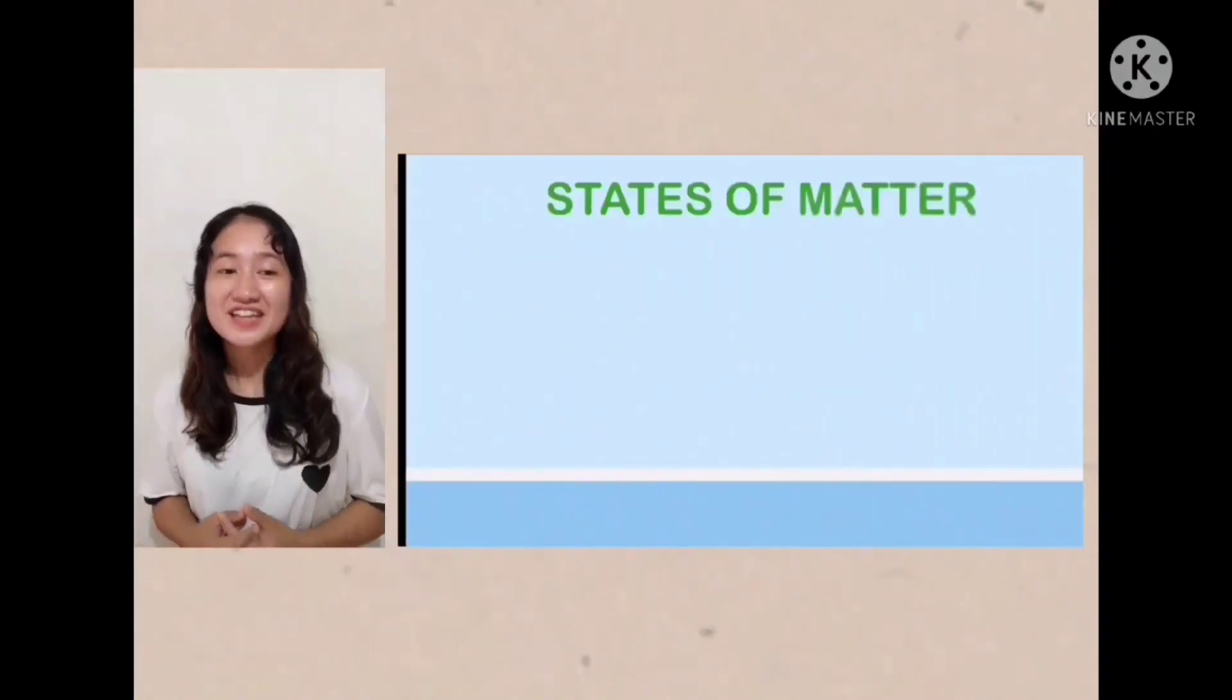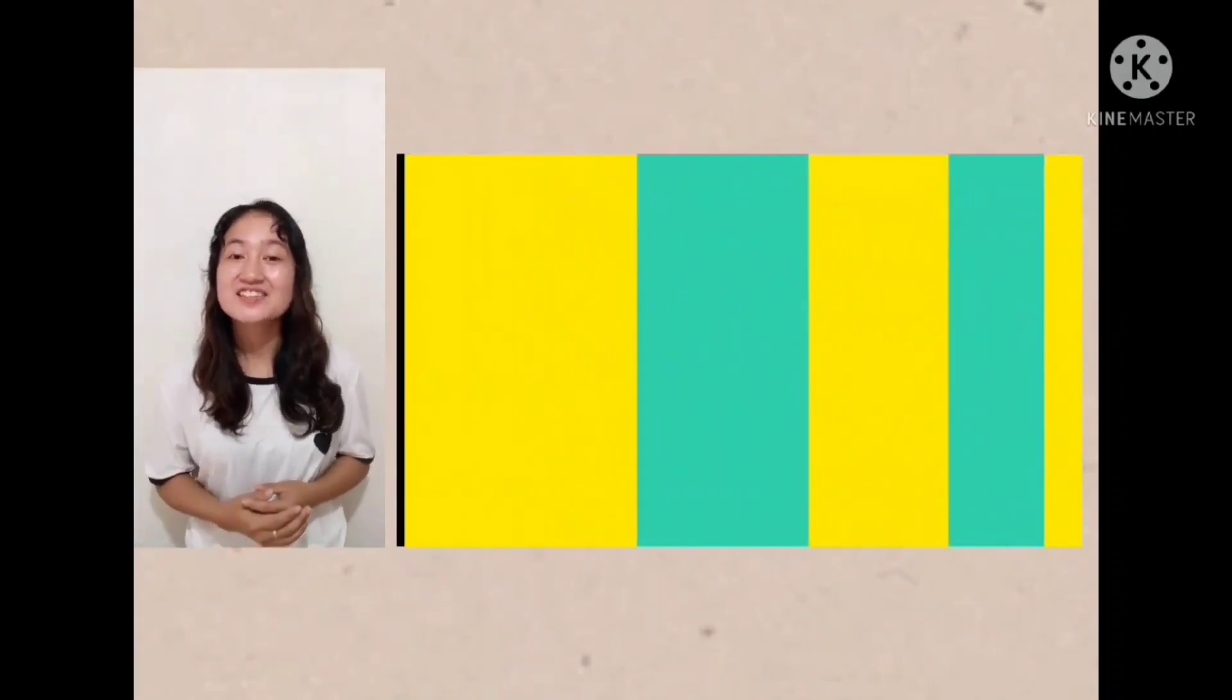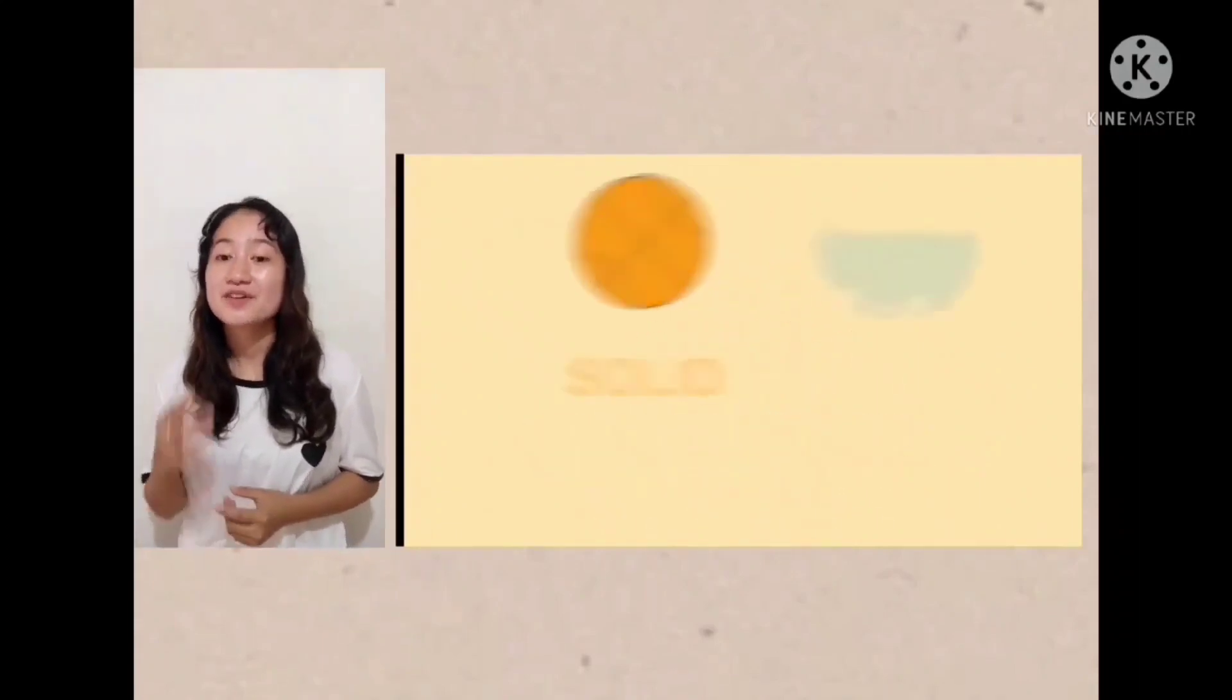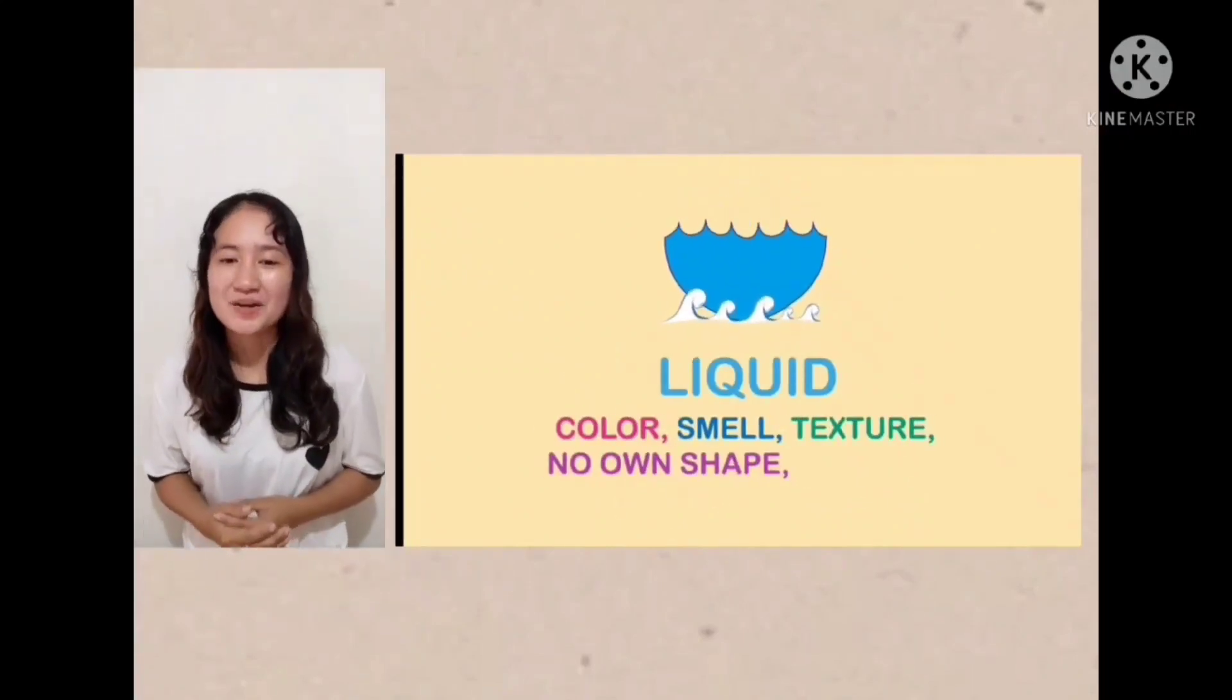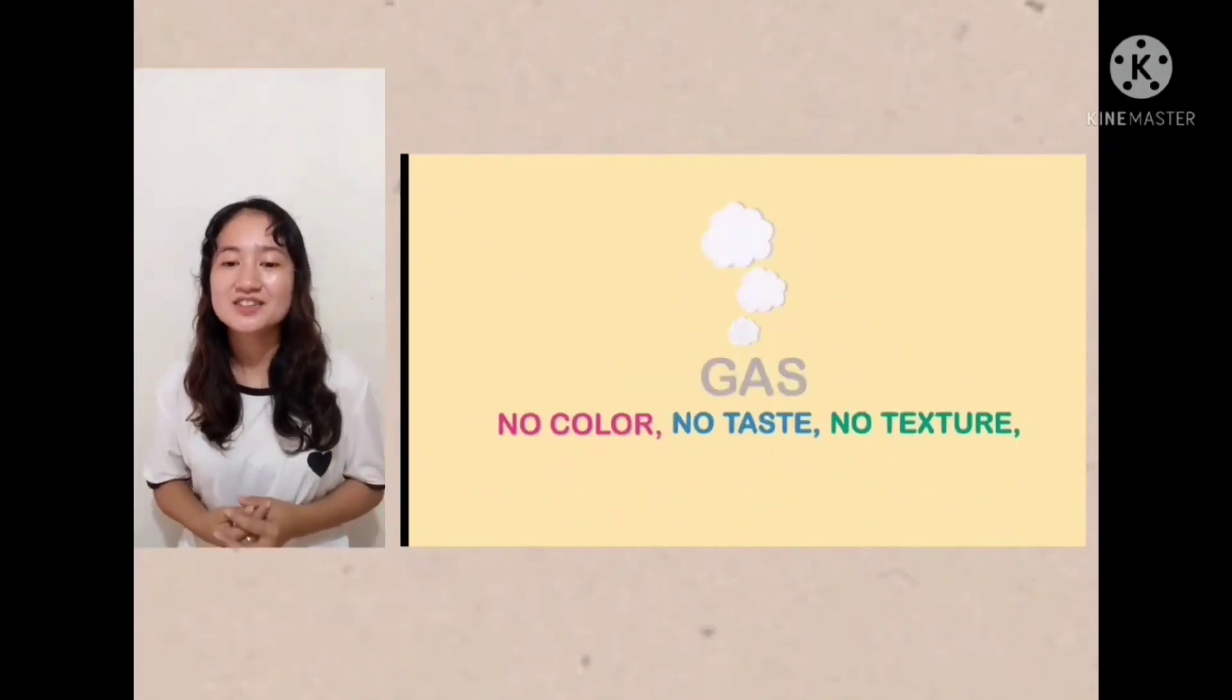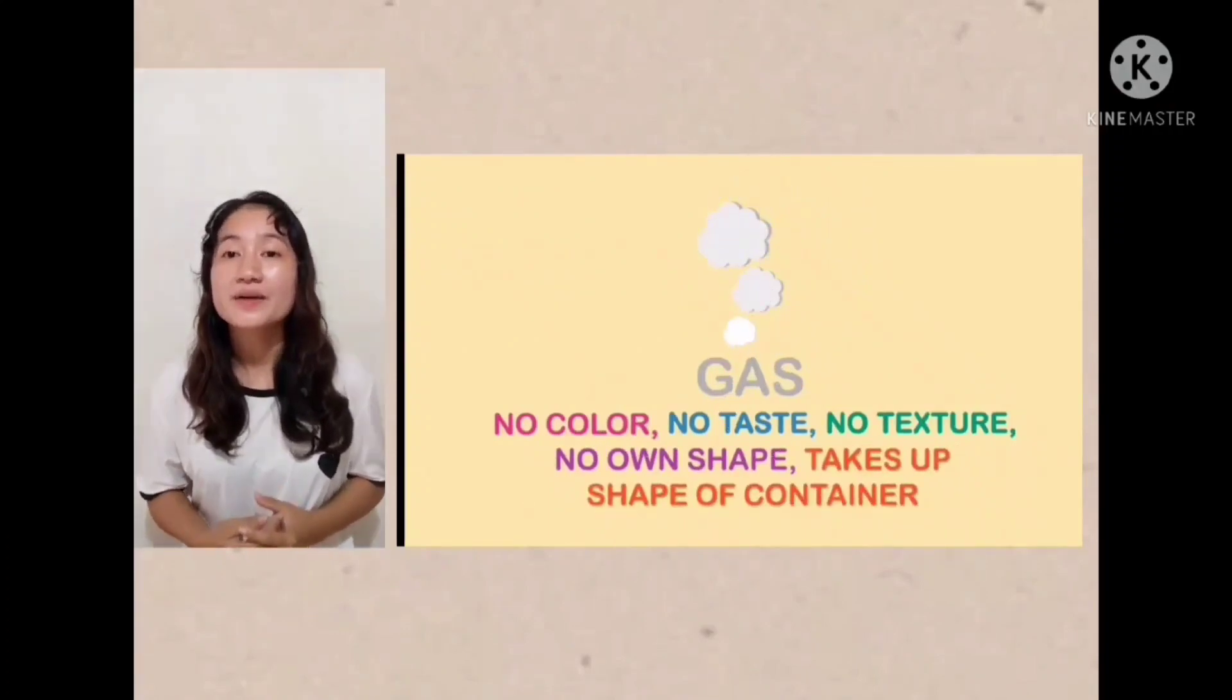Again, the different states of matter: solid, liquid, and gas have their own characteristics. Solid objects have color, size, shape, texture, and hardness. Liquids have color, smell, and texture. They don't have their own shape. They only take the shape of their container. Gas has no color, taste, texture, or own shape. They only take the shape of what they're in.